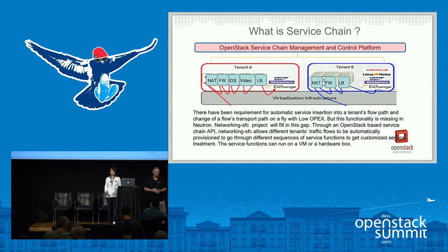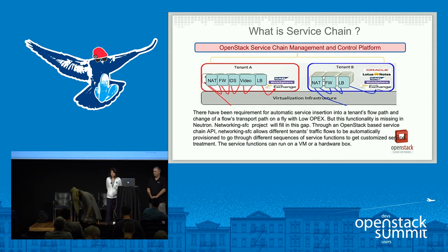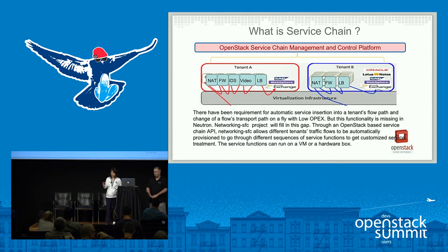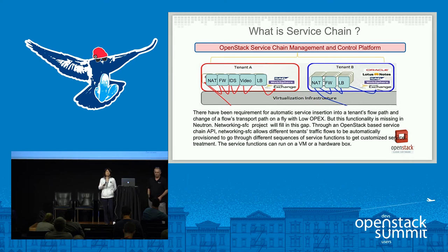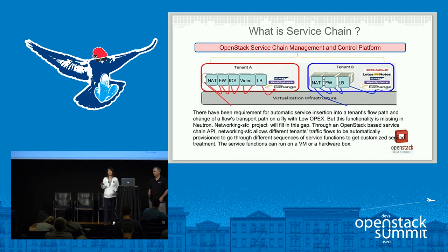First I'm going to go through very quickly what service chain is. By service chain, what we mean is that through a centralized control management and control platform, different tenant flows can be automatically provisioned to go through different sequences of service functions. This service function can run either on a virtual machine, on a container, or on a physical device.